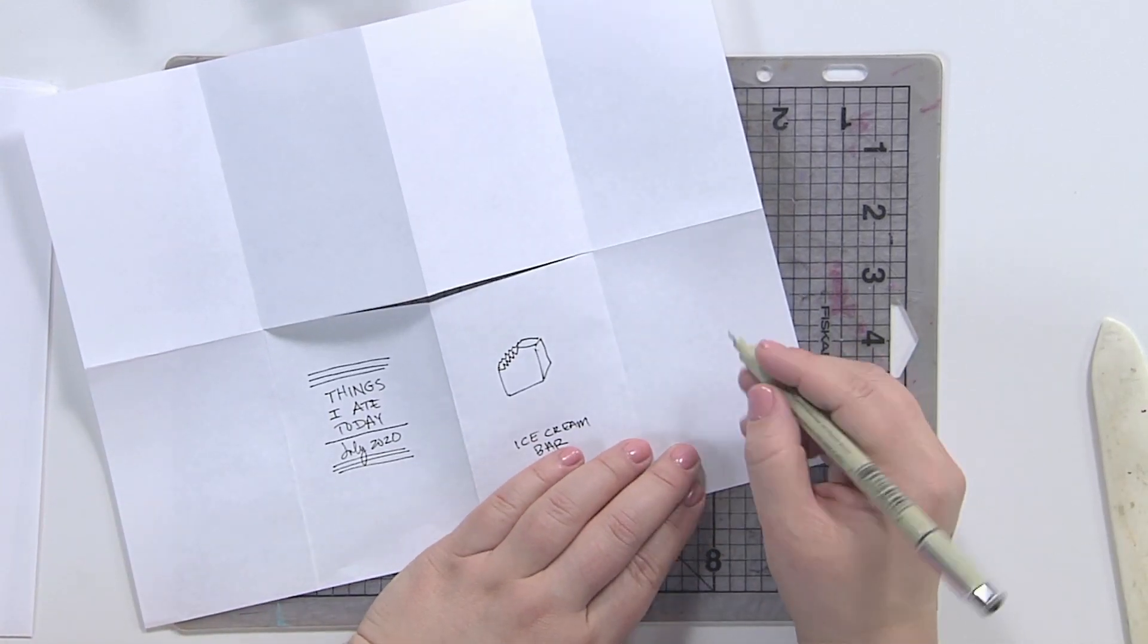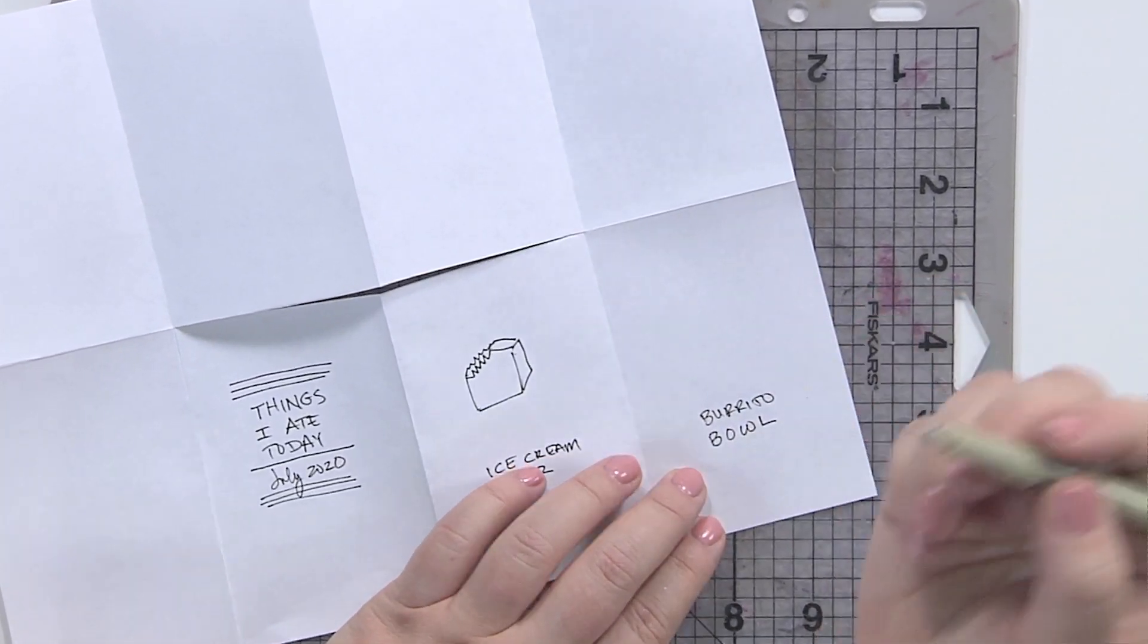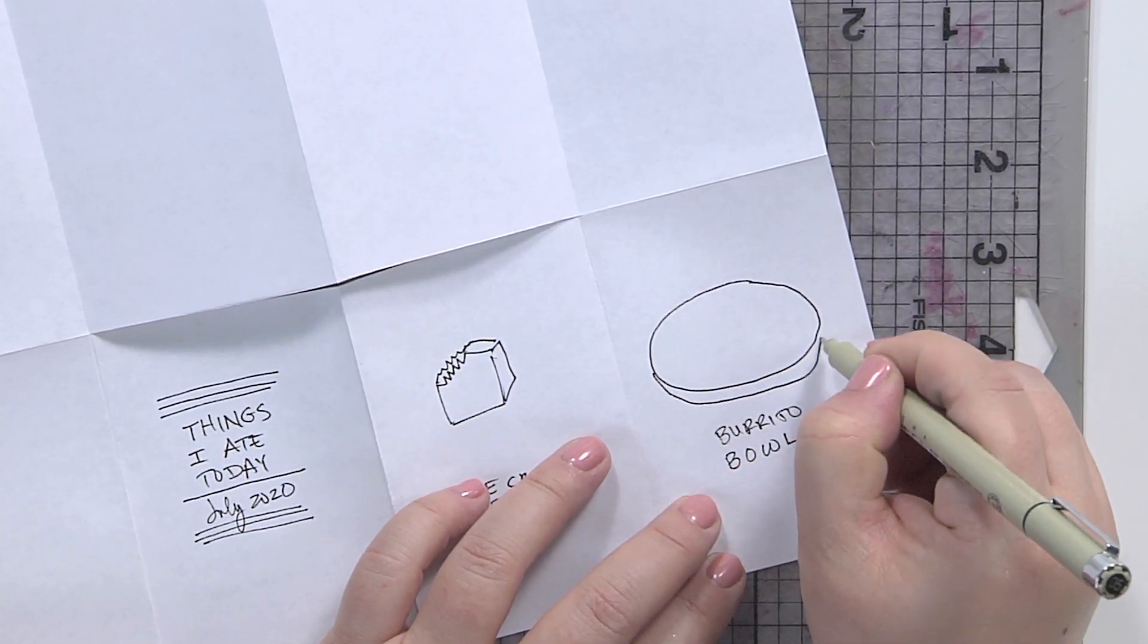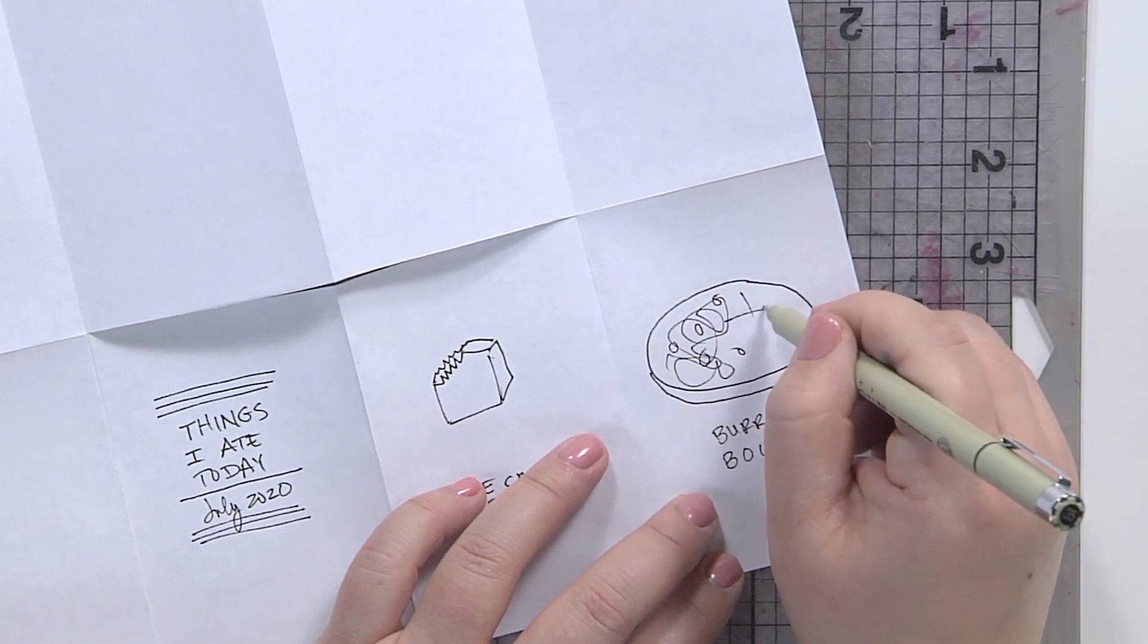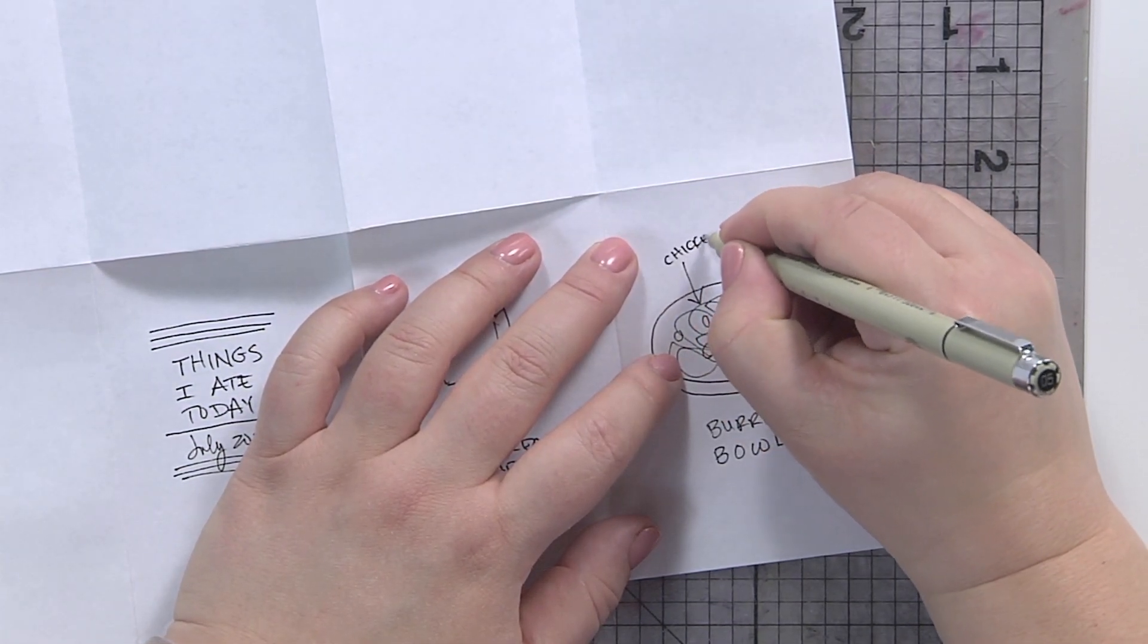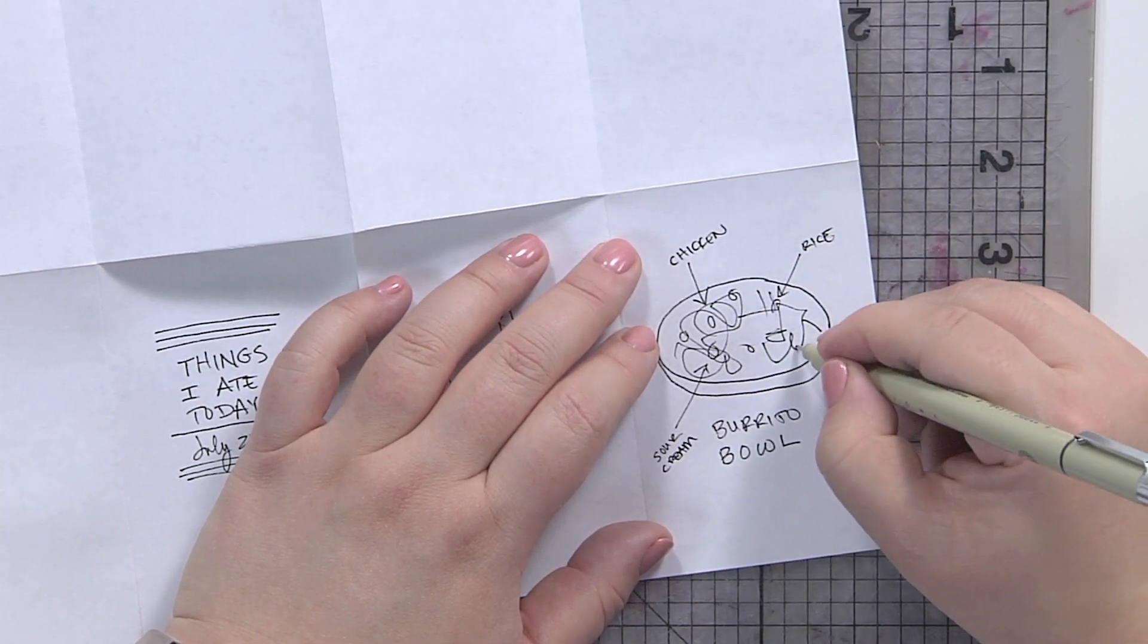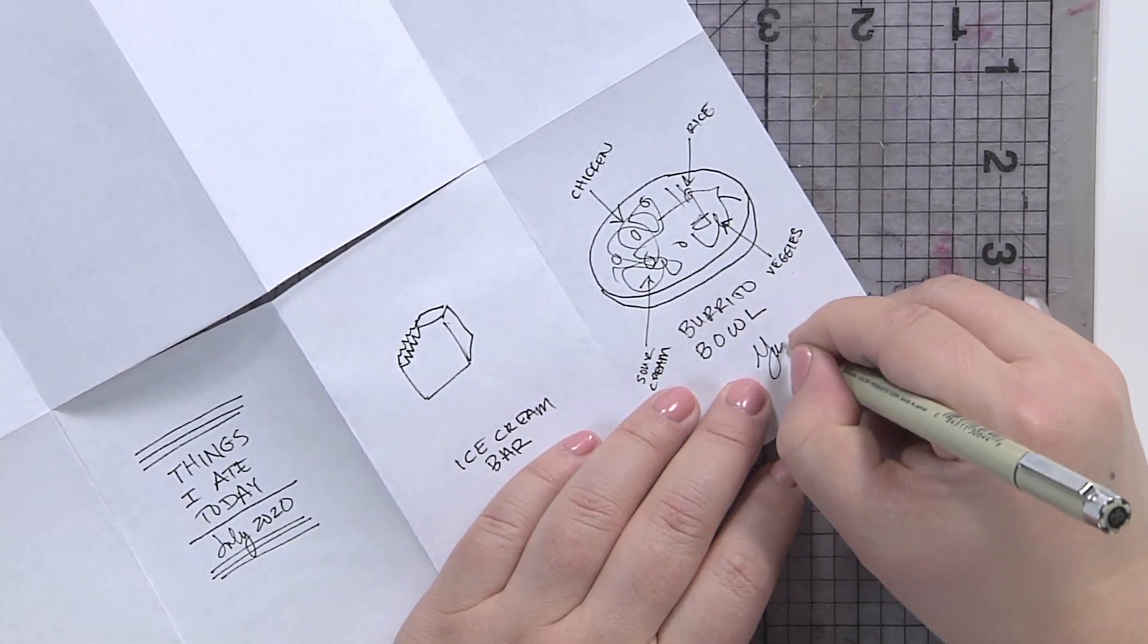What else did I eat today? I had a burrito bowl. So I'm going to go ahead and draw that. Now, do I need to draw every component perfectly? No. And notice I'm not using a pencil first. I'm going ahead with my pen. And these are the kind of things that I like to do when I'm in a hotel room, when I'm just sitting waiting for something. But if you ask me what does a burrito bowl look like, it kind of looks like this. Maybe it has some of this. It looks a little bit like this. And if my drawing isn't clear, I can say, this is chicken. This is rice. I had some sour cream. You don't have to think a lot about what you're doing. You just have to sort of have fun with it. This is veggies. And I can add my journaling, which might just be yum.